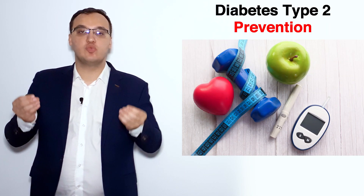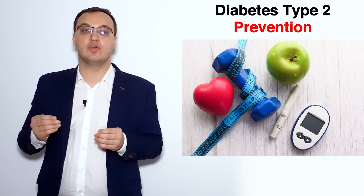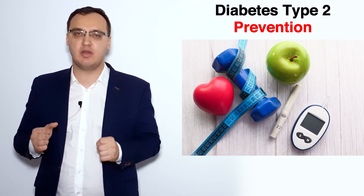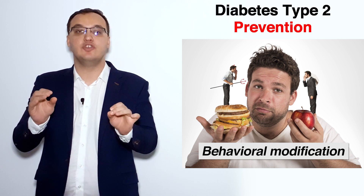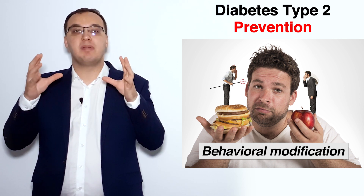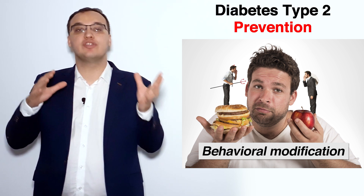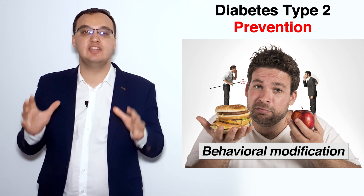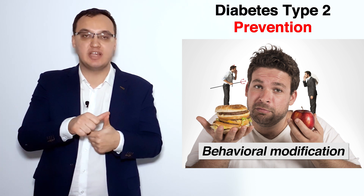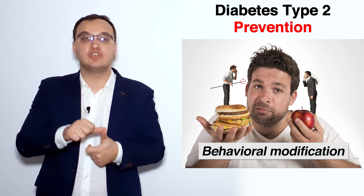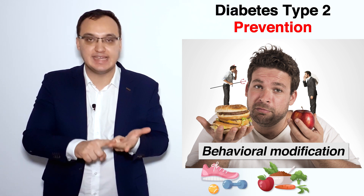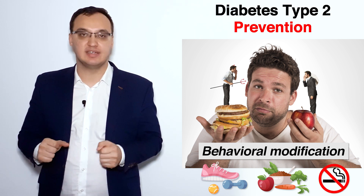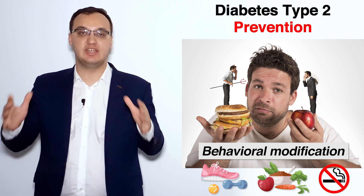What we need to do to prevent diabetes from happening is to do four main things. First: behavior modification. We need to modify your thoughts and your behavior — meaning what habits do you have — and we need to change those habits. Habit formation is the most important one, and it includes exercising, diet, and stopping smoking. These are all habits that we need to address.